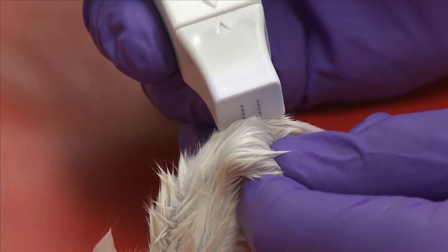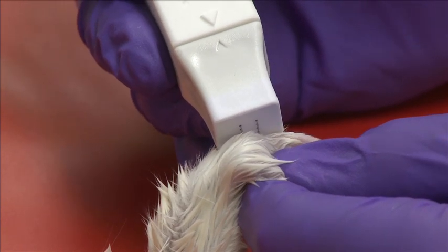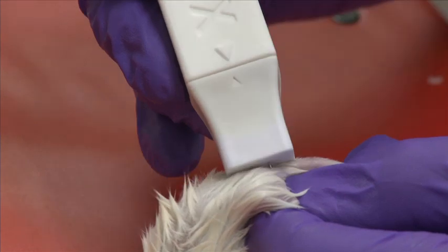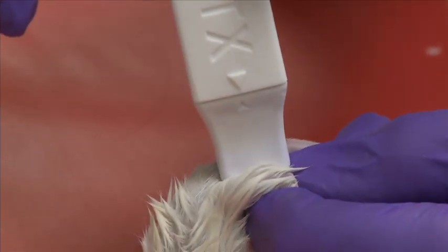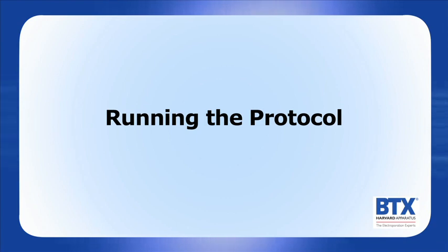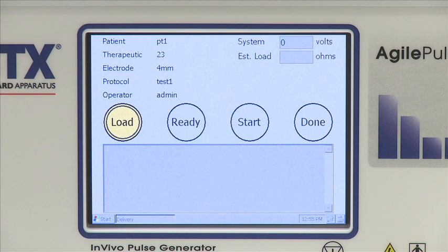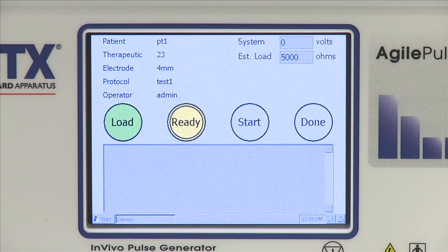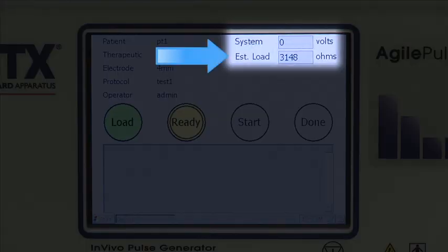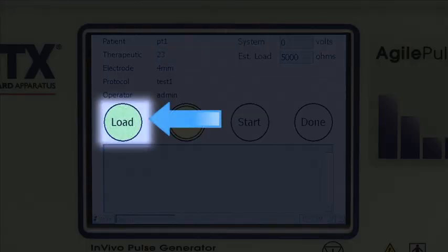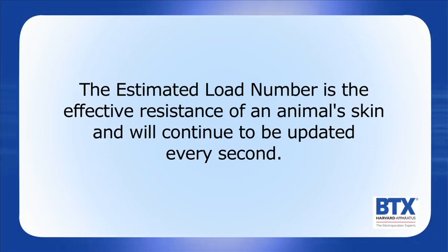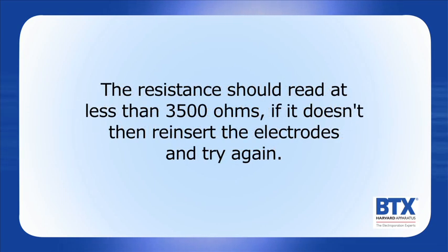For the proper insertion of the arrays, position the needles so they span the injection site and hold at an angle. Push the needles in by rolling forward until the needles are fully inserted. Determine if the electrode is inserted properly by touching the load button. A small pulse is delivered to the electrode to verify that an electrode is inserted. A number will appear in the estimated load box and the load button will change to a green color. This number is the effective resistance of the animal's skin and will continue to be updated every second. The resistance should read at less than 3500 ohms. If it doesn't, reinsert the electrodes and try again.